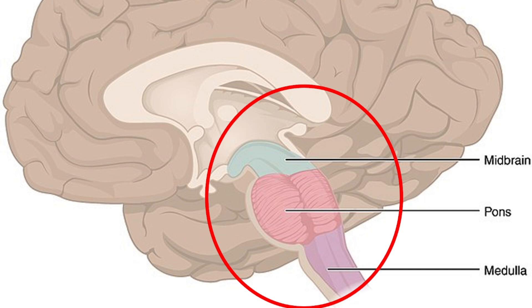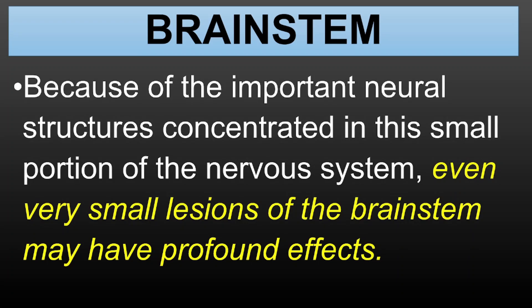The midbrain is involved in motor control, vision, hearing, and regulating the sleep-wake cycle. It also contains centers important for reflexes associated with these functions, like eye movement and auditory processing. The pons connects the cerebellum to the rest of the brain and plays a key role in regulating breathing and sleep cycles. It also helps relay information between the cerebrum and the cerebellum. The medulla oblongata is responsible for autonomic functions such as heart rate, breathing, blood pressure, and digestion. It is vital for reflexes like coughing, swallowing, and sneezing. Disorders affecting the brainstem can be very serious — from speech issues to respiratory problems, damage to this small area can have widespread consequences.